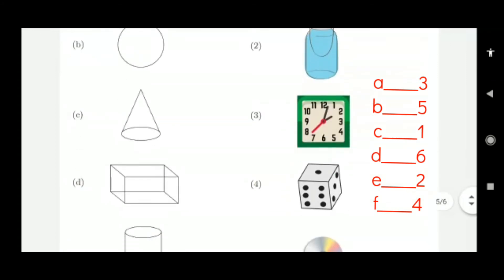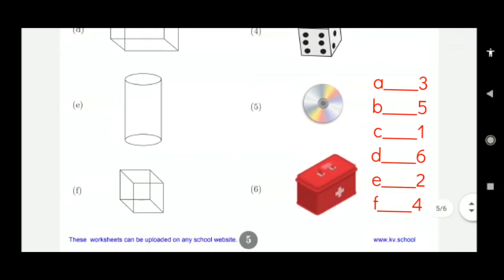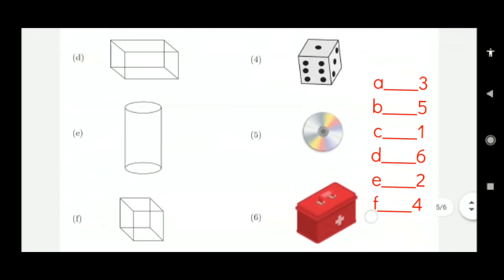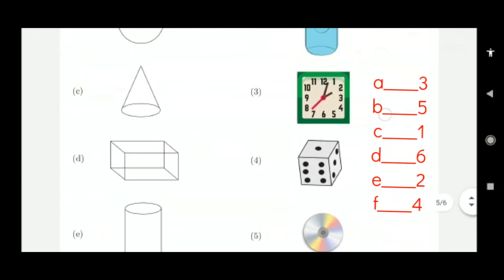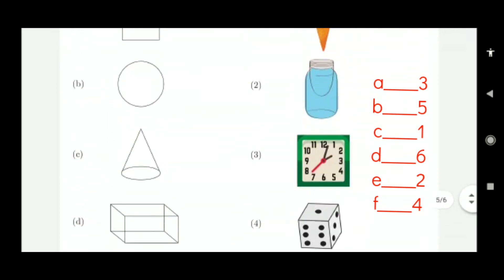And this is cuboidal, cube. Cube means this box and dice. D to 4. Then cylindrical. Which is cylindrical here? Cylindrical is 2, that bottle. E to 2.